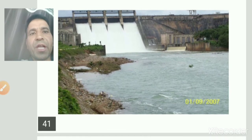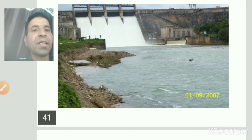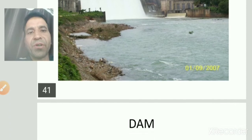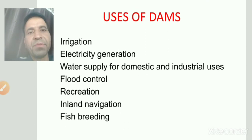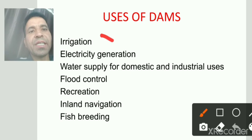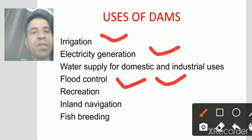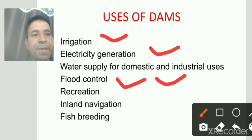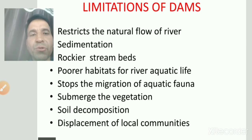Generally dams का use क्या होता है — rivers के पानी को store किया जाता है, जिससे हम flood control कर सकते हैं, electricity generate कर सकते हैं, और water का use irrigation और drinking के लिए कर सकते हैं। Uses of dams: irrigation, electricity generation, water supply for domestic and industrial use, flood control, recreation, and fishing and breeding.